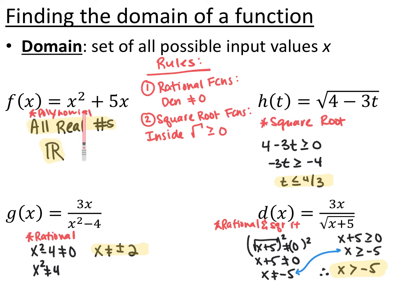For the first function, a quadratic with no context, the domain is all real numbers — negative infinity to positive infinity, written with the bold R for real numbers. For the second, h of t equals the square root of 4 minus 3t: whatever is inside the square root must be greater than or equal to zero. Subtracting 4 and dividing both sides by negative 3 — flipping the inequality — gives t is less than or equal to four thirds.